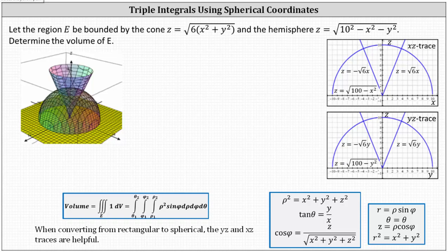Let the region E be bounded by the cone z equals the square root of the product of six and the sum of x squared and y squared, and the hemisphere z equals the square root of the quantity 100 minus x squared minus y squared. Determine the volume of E. The three-dimensional graph is shown below. The region E is the volume inside the cone capped off by the hemisphere. Recall we can determine volume using triple integrals: the volume V of the solid E is equal to the triple integral over the solid region E of one dV.